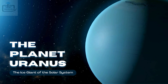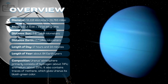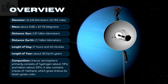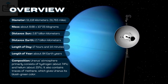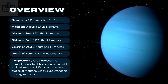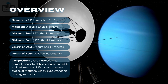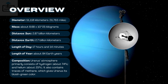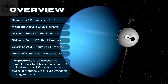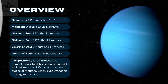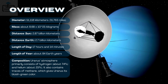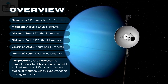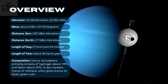7. The planet Uranus, the ice giant of the solar system. Overview: Diameter — 51,118 kilometers (31,763 miles). Mass — about 8.68 × 10^25 kilograms. Distance from Sun — 2.87 billion kilometers. Distance from Earth — 2.7 billion kilometers. Length of day — 17 hours and 14 minutes. Length of year — about 84 Earth years. Composition: Uranus' atmosphere primarily consists of hydrogen, about 74%, and helium, about 25%. It also contains traces of methane, which gives Uranus its bluish-green color.